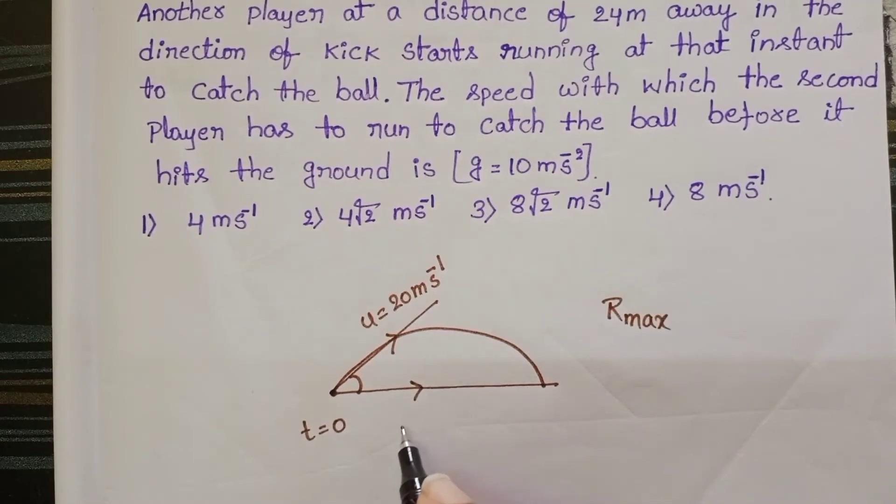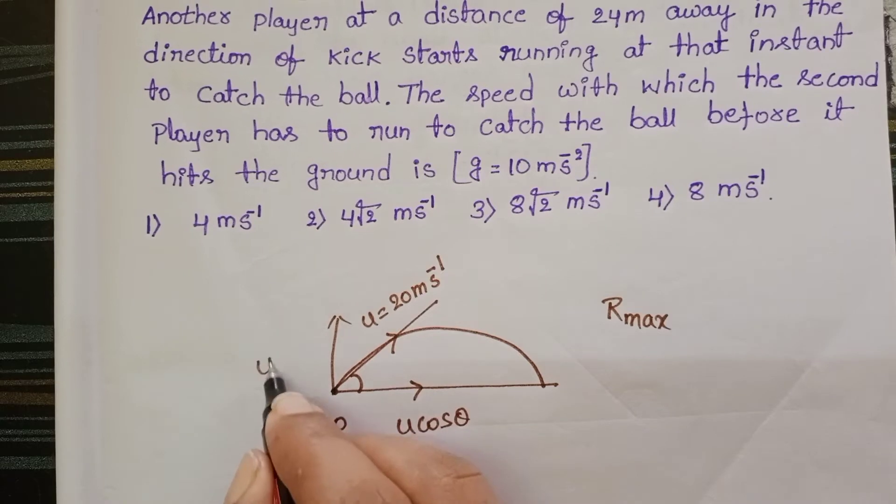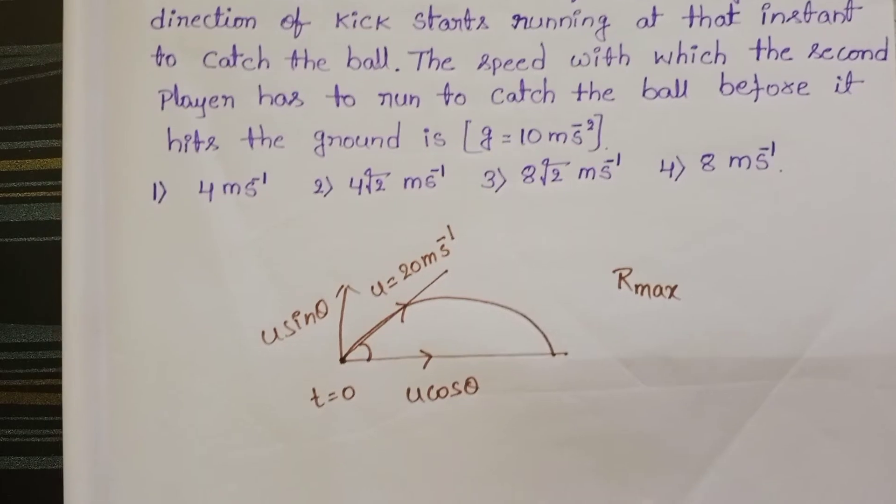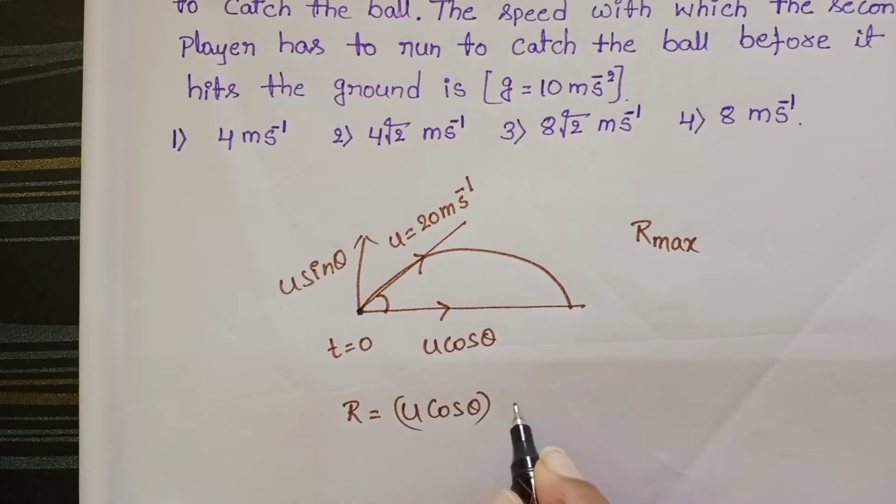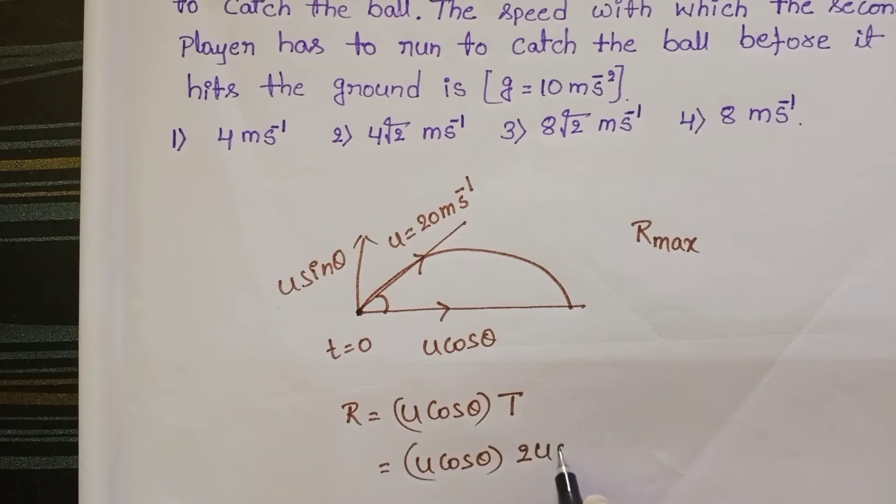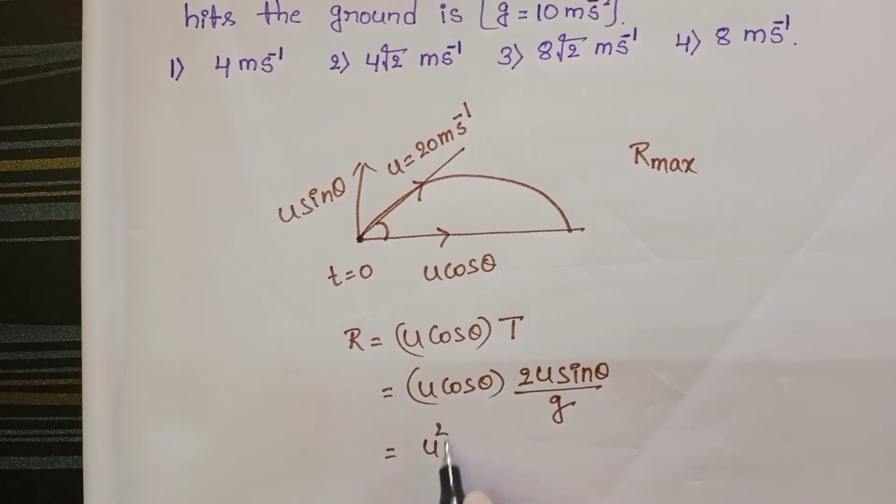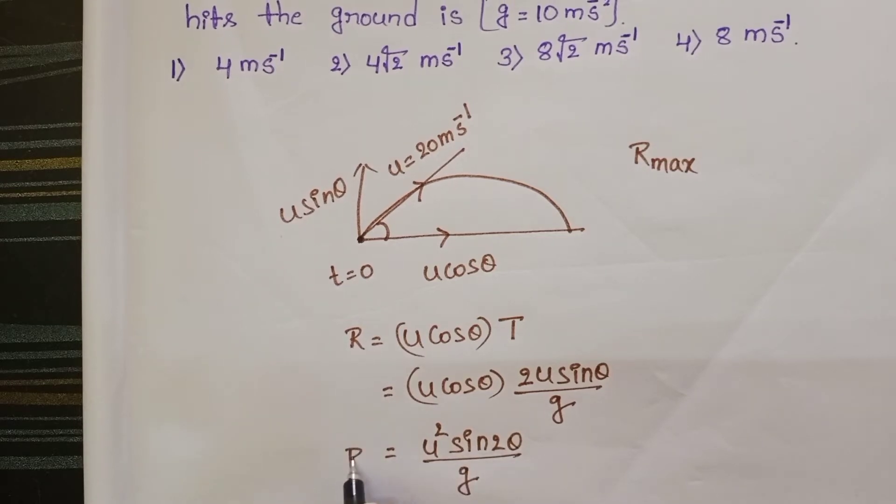Horizontal component of velocity u cos theta and vertical component u sin theta. Range is equal to horizontal component of velocity into time of flight. Time of flight 2u sin theta by g. 2 sin theta into cos theta sin 2 theta. So u square sin 2 theta by g. This is the formula for the range.